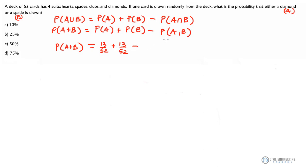And there's also 13 spades in the deck, so the probability that B happens is 13 over 52. And again, since our events are mutually exclusive, they can't happen at the same time.